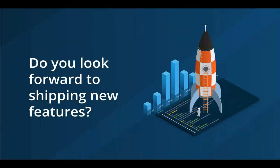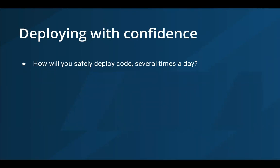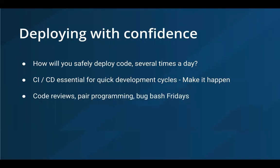One key measure I look for when I ask engineers is: do they actually look forward to shipping new features, or does it fill them with a sense of dread? If we push this live, is it going to go wrong and is there no real safety net? If you can get your team to ask: do we have confidence in shipping what we've built? Have we got the monitoring in place so that if it does go wrong, we can pull it back? That's the litmus test of whether you've got the culture and team mentality in the right place. Deploying with confidence really comes from how we deploy code safely as a team, and continuous integration and continuous deployment are essential for quick development cycles.